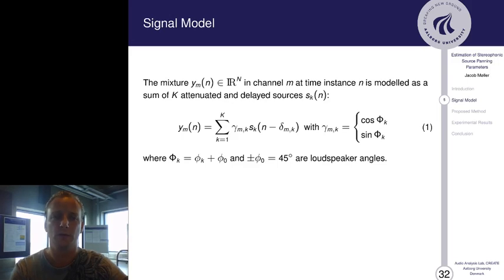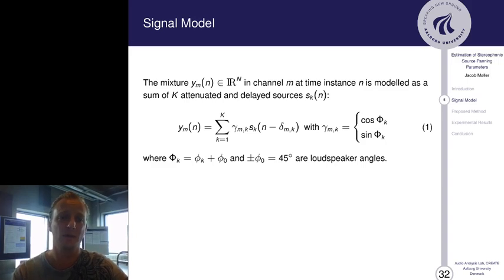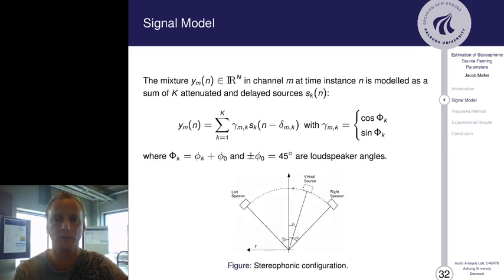We model the mixture y_m in channel m at time instance n as a sum of k attenuated and delayed sources. The attenuation gain ratio is called gamma for the k source in the m channel, the source is called s_k, and the delay is delta for the k source in the m channel in samples. The gain ratio gamma_mk is based on trigonometric functions because the trigonometric functions has the quality of giving us a constant distance to the virtual source from the listening position.